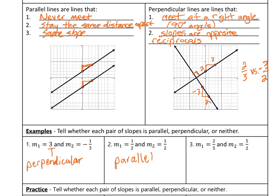Number 3 has 2 fifths and 5 halves. Well, those aren't the exact same, so they're not parallel. They're reciprocals of each other, but they're both positive. And so that means they're not perpendicular. One of them would have to be negative and the other positive in order for that to work. And so our option here that's left is neither.